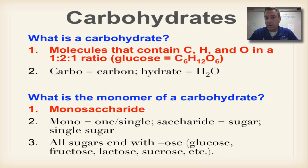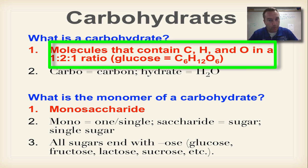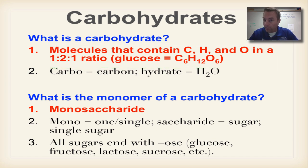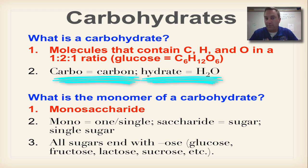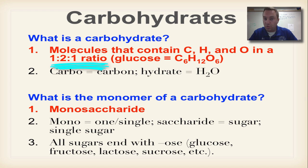Carbohydrates are a compound made out of only three different atoms: carbon, hydrogen, and oxygen. If you look at the word carbohydrate, it's really telling you what it's made out of. Carbo refers to carbon, and hydrate refers to water. Remember the chemical formula of water, H2O — two hydrogens for every oxygen. If you look at the ratio of a carbohydrate, it's a one to two to one ratio: one carbon for every two hydrogens for every one oxygen.